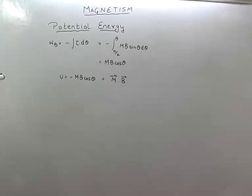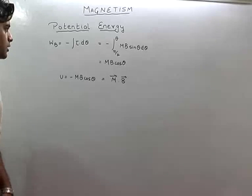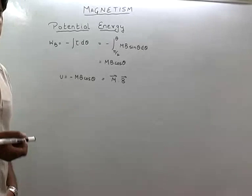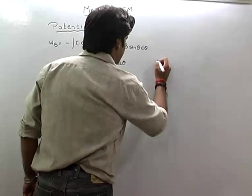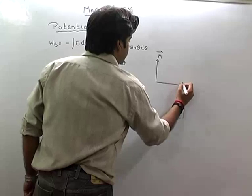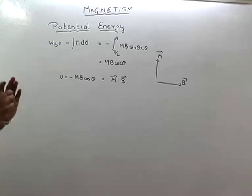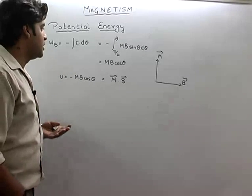Now let us see the potential energy of a loop when it is placed in a magnetic field. What do we call potential energy? When the magnetic moment is perpendicular to the loop, it is set to be in the zero energy state. So if the magnetic moment of the loop is perpendicular to the magnetic field, that is called the zero energy state.